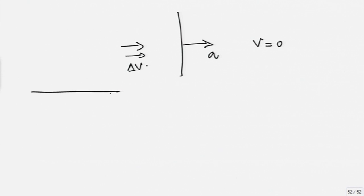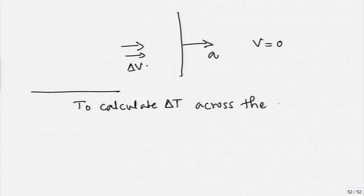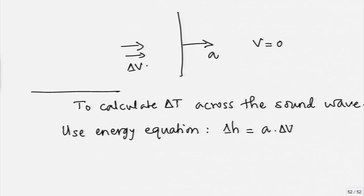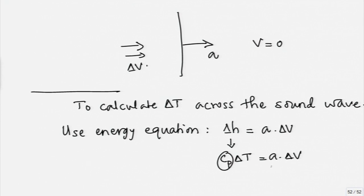The second part is to calculate the change in temperature, delta T, across the wave. One way of doing this is to use the energy equation, which gives the change in enthalpy equal to A times the velocity induced. This is simply Cp multiplied by delta T equal to A times delta V. If you know the specific heat of air, you are done, because both the speed of the wave and the velocity induced have already been calculated.